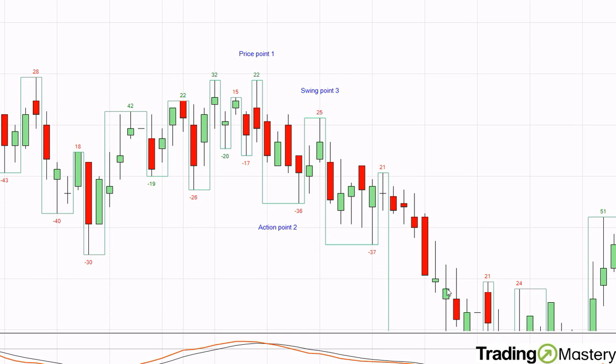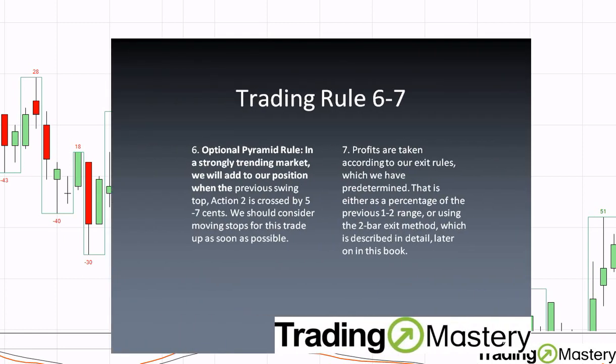Good morning traders. Going to have a look at trading rules 6 to 7 this morning. Trading rule 6 is about pyramiding — it's an optional pyramid rule in a strongly trending market. Add to your position when the previous swing top is crossed, so when action point 2 is crossed by maybe 5 to 7 cents or pips, and then consider how you manage your stops from that point on.